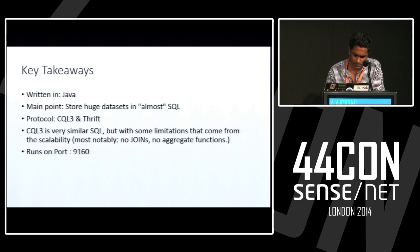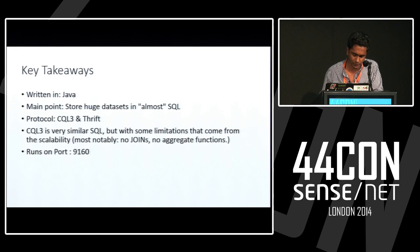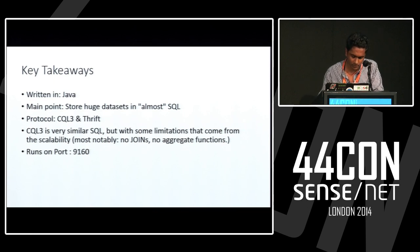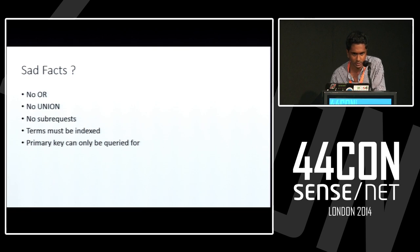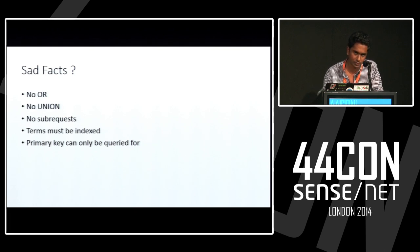Cassandra key takeaways: it is written in Java. The main point is you can store huge datasets. It's almost similar to SQL — it uses CQL (Cassandra Query Language) and the Thrift protocol. CQL is very much similar to SQL, but has limitations from scalability: no joins, no aggregate functions, et cetera. By default, Cassandra runs on port 9160. Some sad facts for attackers: no OR, no UNION, no sub-requests. Terms must be indexed, and primary keys can only be created for certain fields.